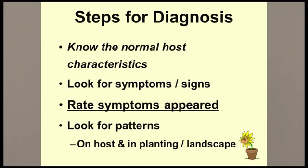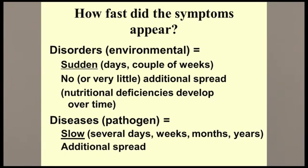How quickly the symptoms appear can often help us determine if they were caused by a plant pathogen or some non-living factor. In general, if the symptoms appear overnight or in a day or two, the problem is most likely a disorder — due to man-made or environmental factors such as over-fertilization, pesticide injury, a late frost, etc. We usually don't see a spread or increase of these symptoms over time. Symptom development takes longer with diseases caused by pathogens, sometimes weeks or even years, and we usually do see additional spread of the symptoms — more spots on different leaves on a single plant, or more nearby plants showing symptoms.